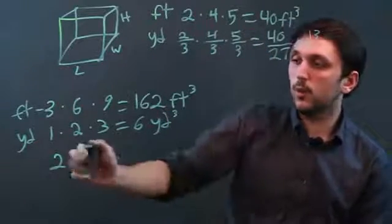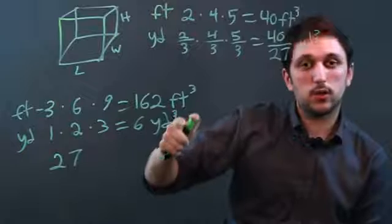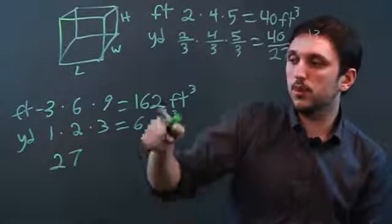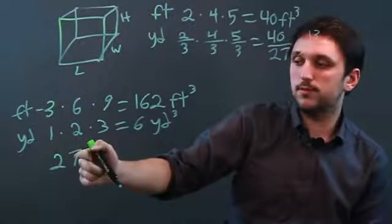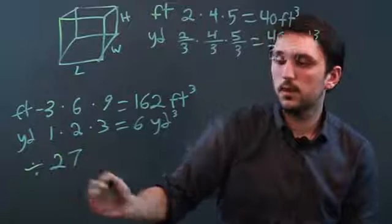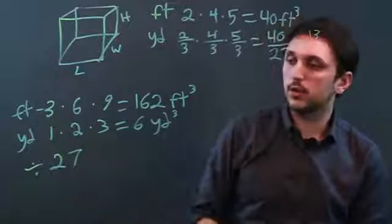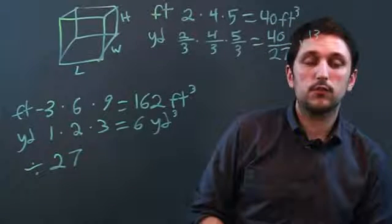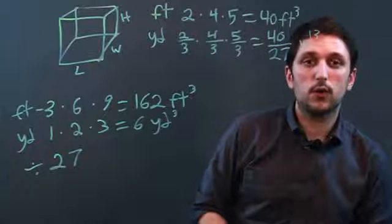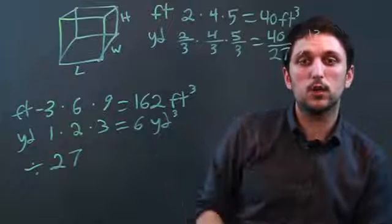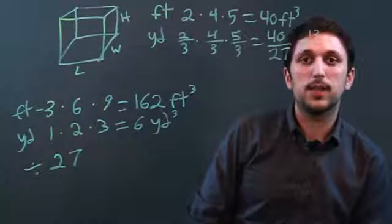So whenever you want to convert cubic feet into cubic yards, you just divide by 27 and you'll get your cubic yards. I'm Charlie Kesov, and you just learned how to convert from cubic feet to cubic yards. Thanks a lot.